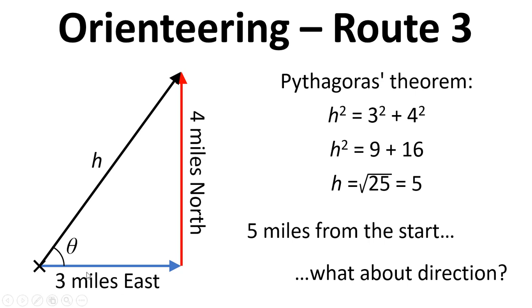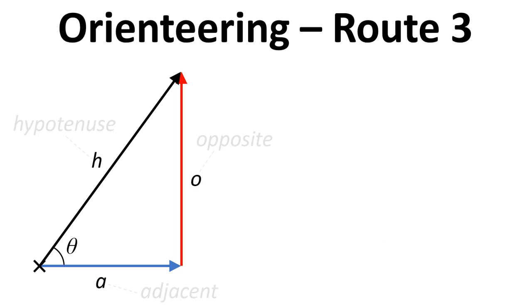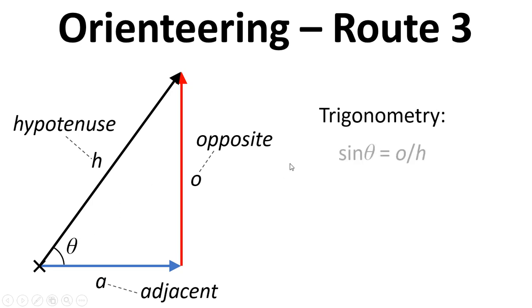So we need to work out this angle here, theta. And we're going to need to use trigonometry to do that. So in trigonometry for a right angled triangle we refer to some different terms for the different lines. So we've already mentioned the hypotenuse, we've also got the adjacent which is against or adjacent to this angle, and we've got the opposite which is opposite to this angle here.